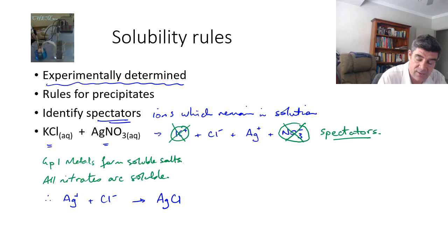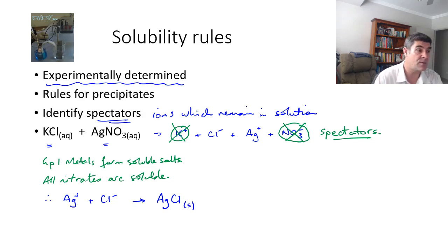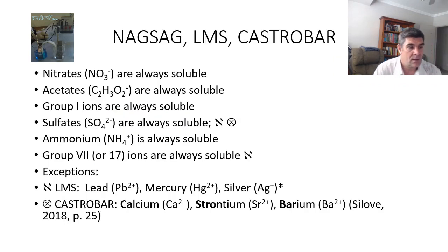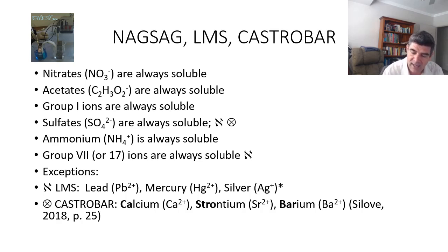If the concentration of ions is greater than the solubility, then we will have a precipitate. We need a couple more steps to actually quantify this, so let's look at some general rules we can use. There are variations on these rules — it doesn't really matter which ones you pick as long as you have a way of remembering some of these key solubility rules. The first mnemonic to look at is NAGSAG.